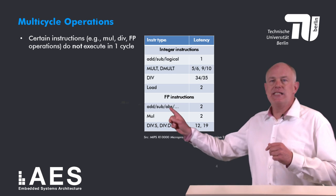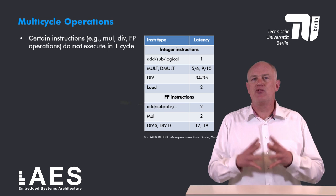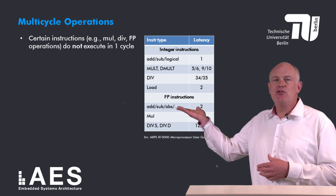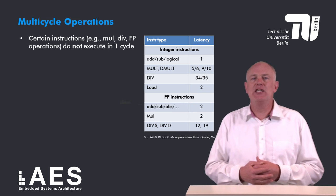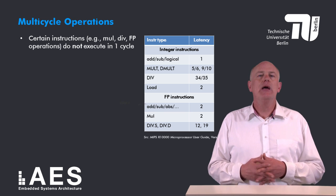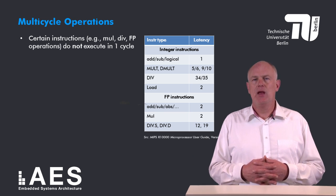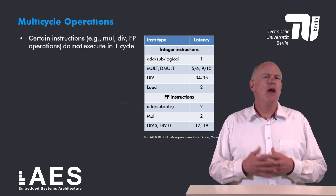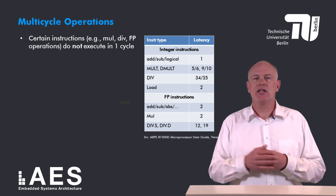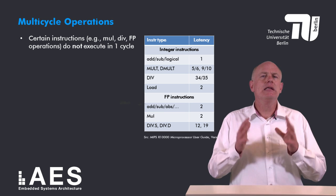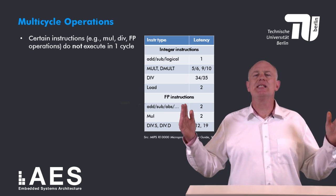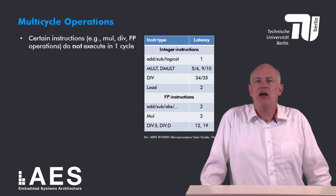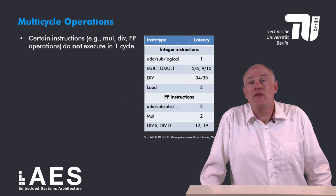To illustrate this, this table shows the latencies of some instructions on the MIPS R10K microprocessor. Integer instructions such as add, subtract, and logical operations all have a latency of one cycle, meaning they execute in a single cycle. Integer multiplication however requires 5 or even 6 cycles to execute — the exact latency depends on the next instruction. A double word multiplication, Dmult, is even worse and requires 9 or 10 cycles, while integer division takes 34 or 35 cycles.